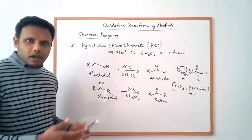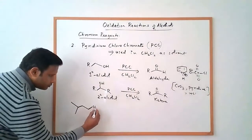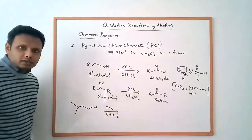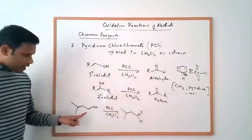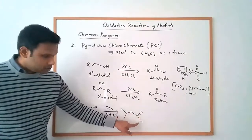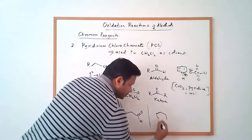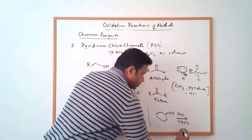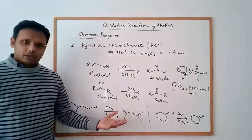Let's look at two quick examples. For the oxidation of a primary alcohol: when reacted with PCC in dichloromethane, it is converted into the corresponding aldehyde — the alpha carbon connected to the hydroxyl group is converted into the C=O, giving the aldehyde product. Similarly, when a secondary alcohol is reacted with PCC in dichloromethane, it is converted into the corresponding ketone.